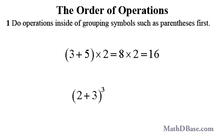If we have 2 plus 3 quantity cubed, we should add 2 and 3 first to get 5, then cube the 5 to get 125.